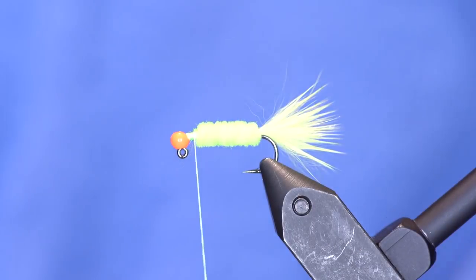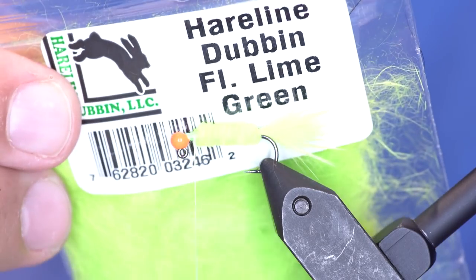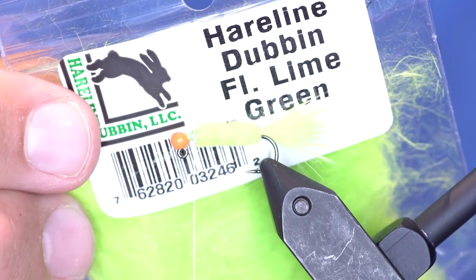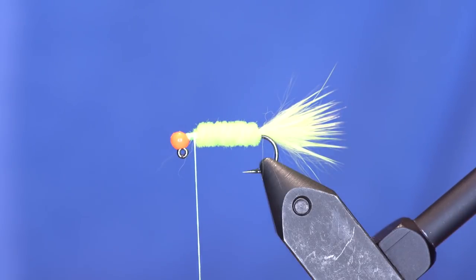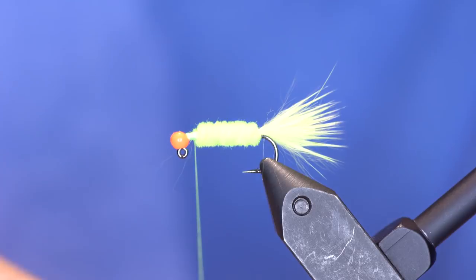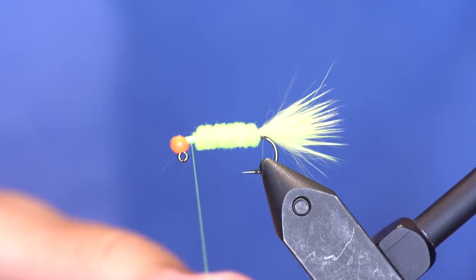Okay, the thorax is just going to be Hareline dubbin, the original gangster fluorescent lime green. And I'm going to wrap down kind of a base layer. And there's a trick to tying in rubber legs in a thorax, and I'll just show that to you. It's pretty simple.